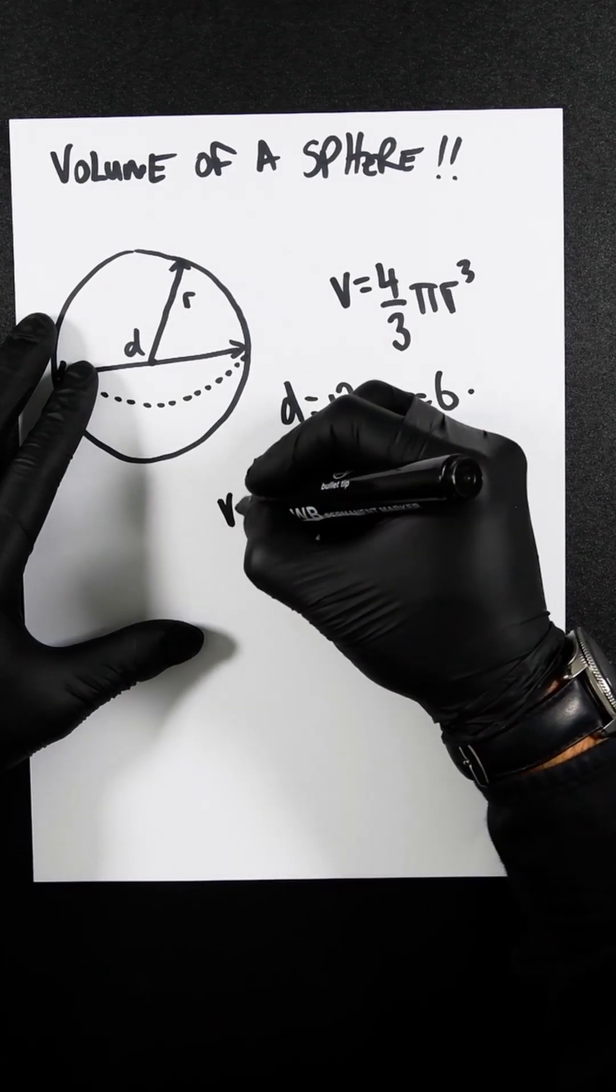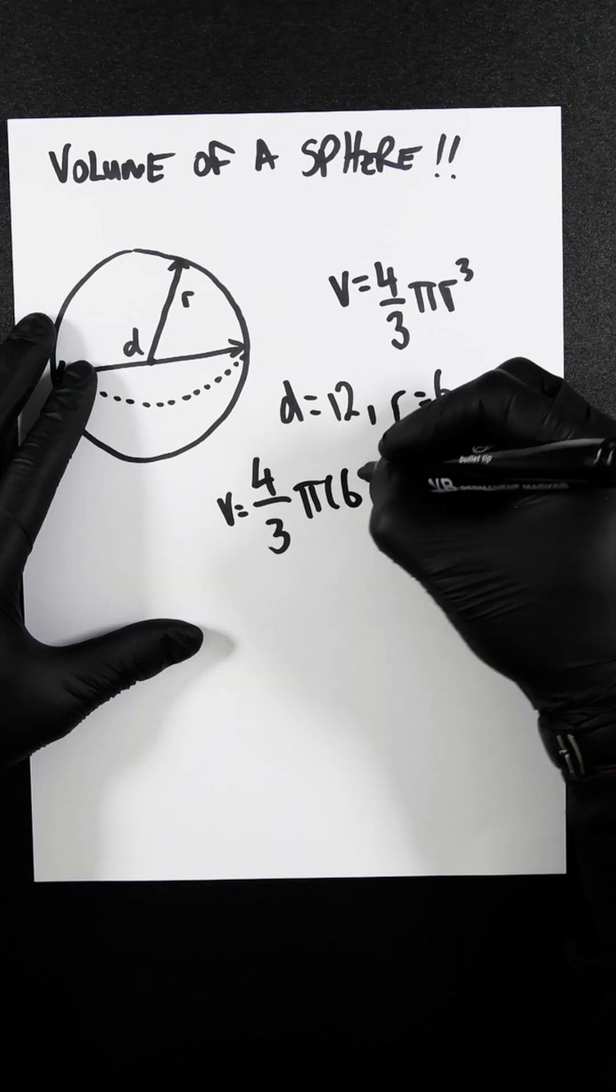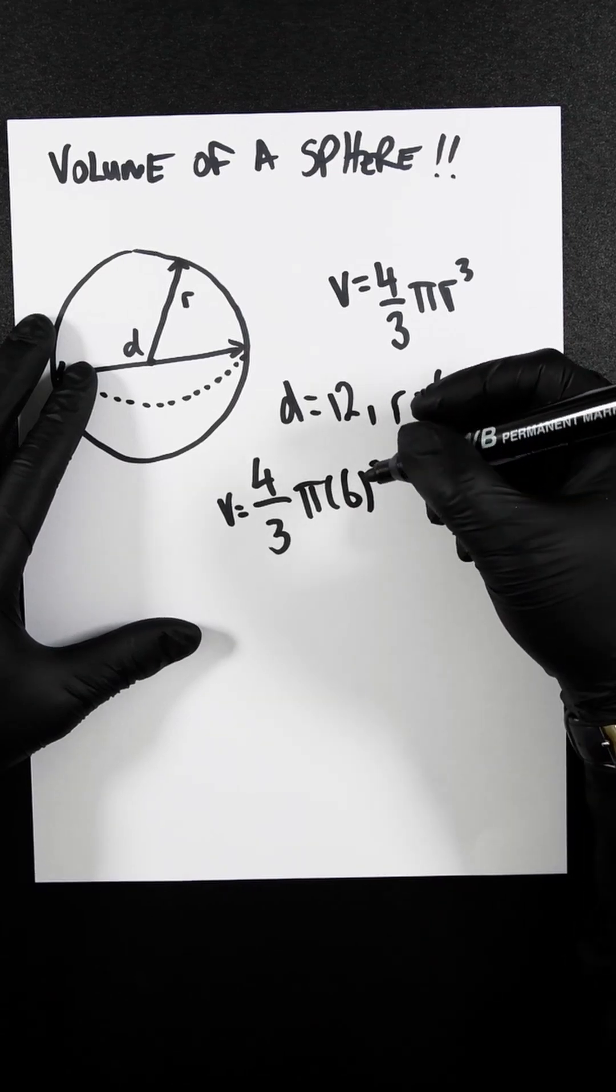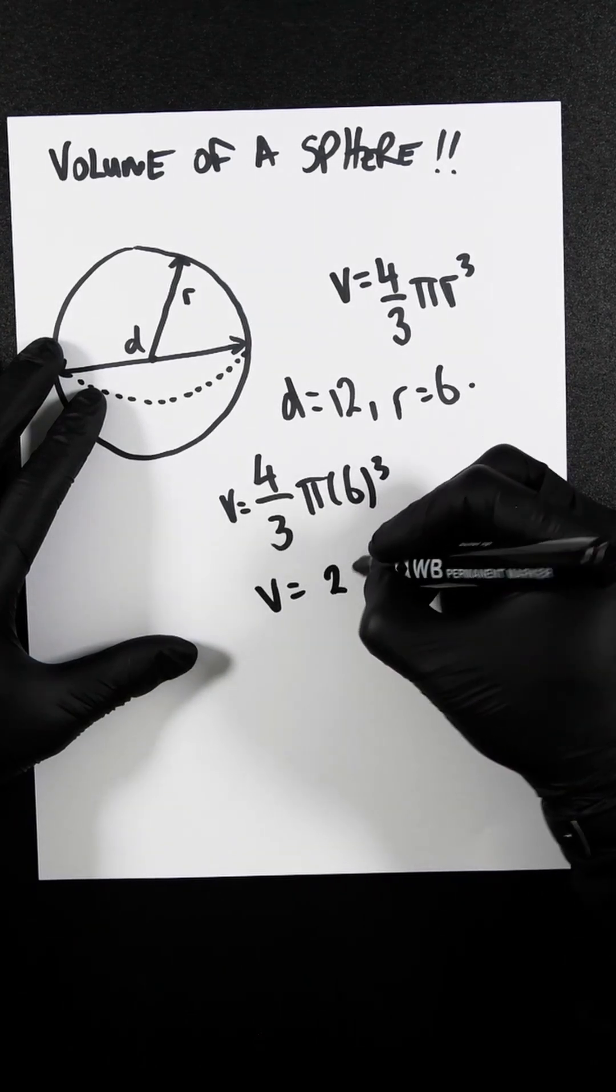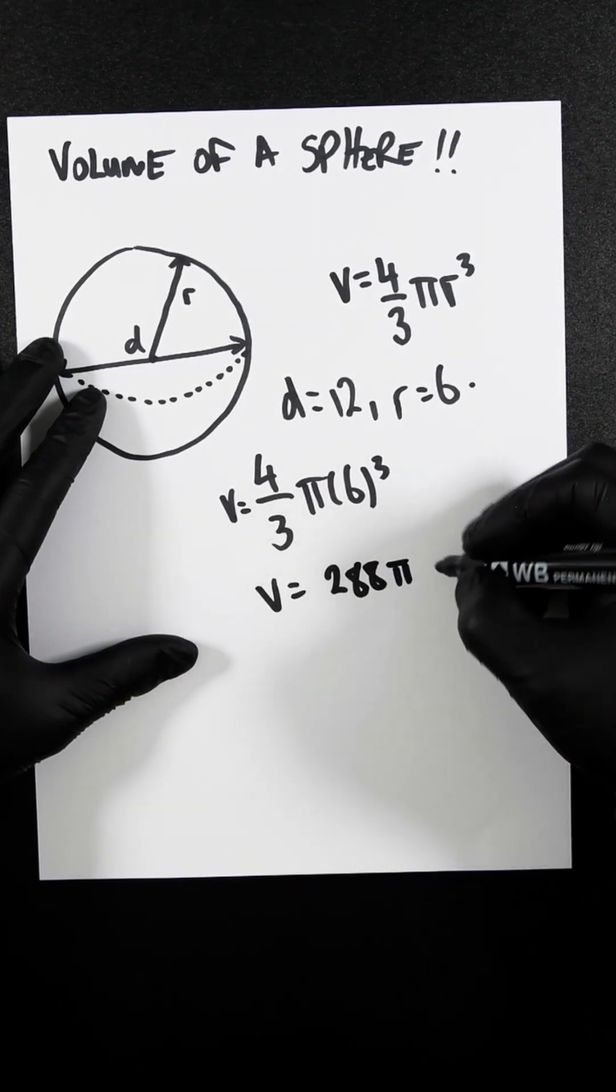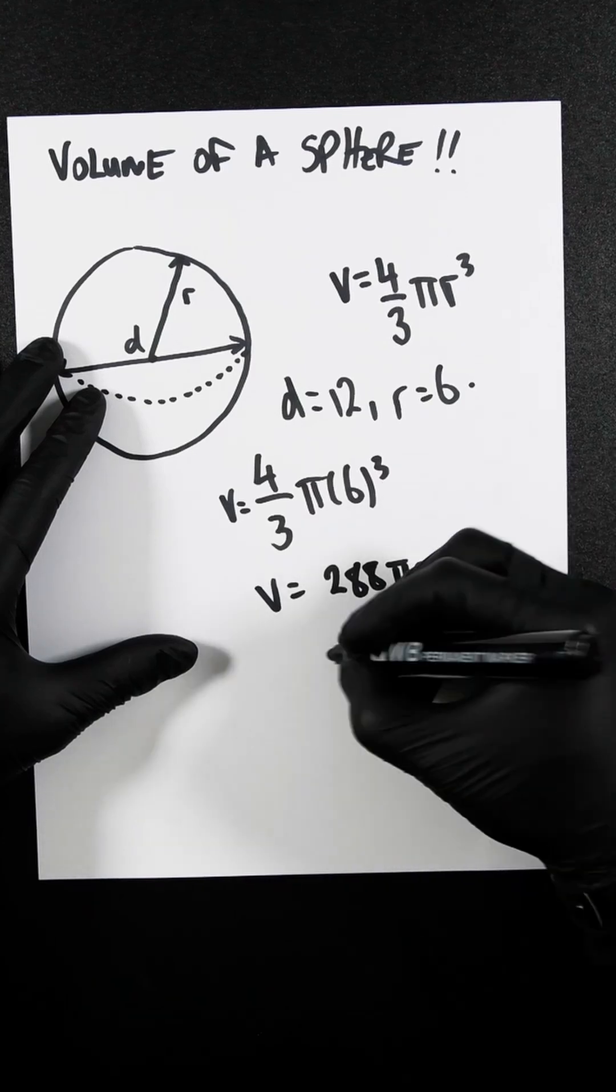4/3π(6)³. So you're now going to get V = 288π centimeters cubed.